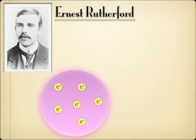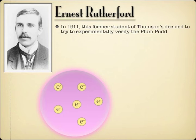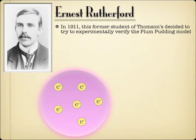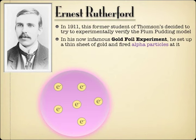Then along came Ernest Rutherford. Ernest Rutherford was a one-time student of J.J. Thompson, who was from New Zealand — a potato farmer, if I remember correctly. What he decided to do was test J.J. Thompson's model. He was going to do an experiment to help verify the idea of the plum pudding model. In the end, he would actually end up disproving the plum pudding model through his infamous gold foil experiment, one of the most famous experiments in early atomic history.